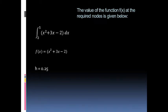For the value of the function f(x) at the required nodes, it is given below. Starting from x equals 2, since that's the lower limit.